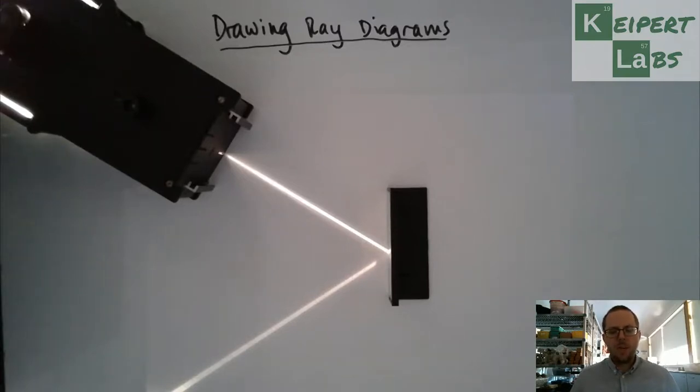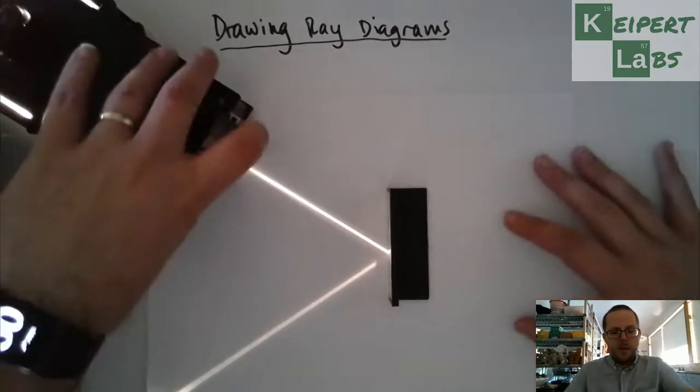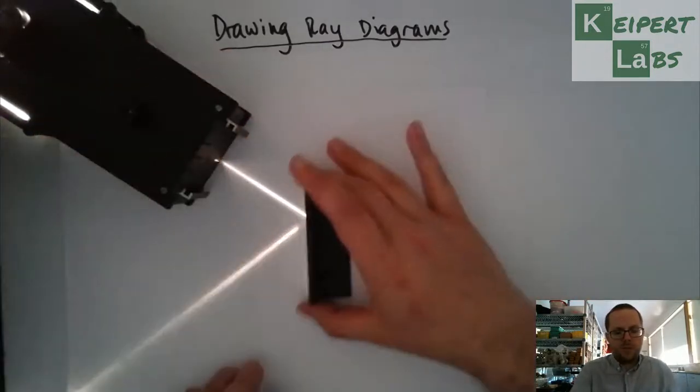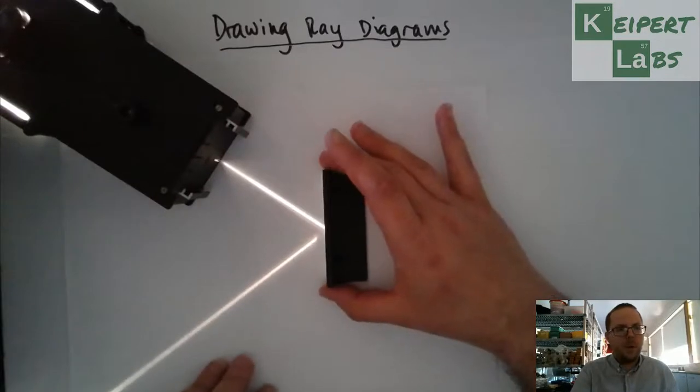One of the things that is a crucial skill to learn when we're dealing with the behavior of light with mirrors and lenses is being able to draw a diagram representing what you see. So there's a couple of ground rules that I'm going to establish and then I'm going to walk you through the process for drawing.